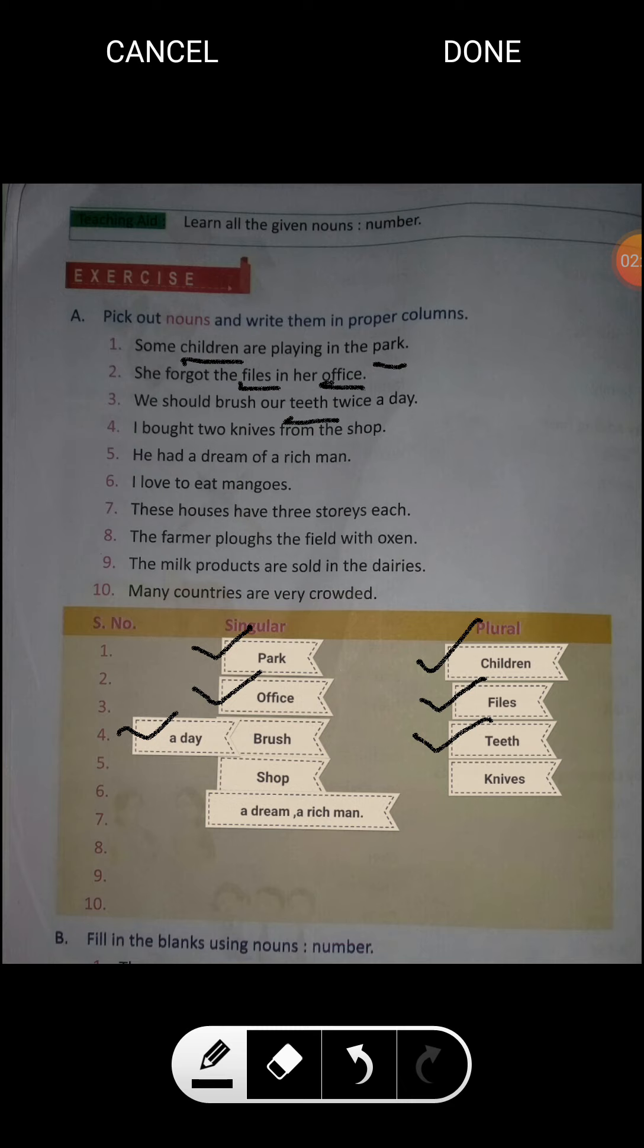Sentence four: 'I bought two knives from the shop.' Here knives is the plural number. So we should write knives in the plural column. Then we have shop, which is one in number. That means we should write the noun shop in the singular column.